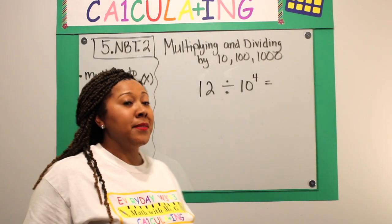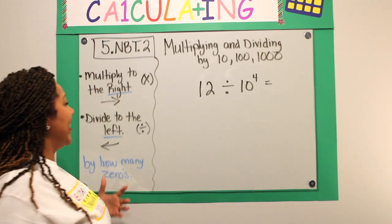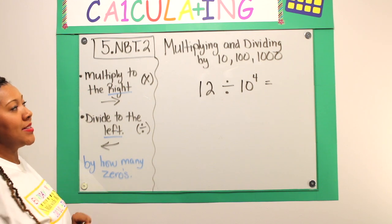Now, let's look at a division problem. I have 12 divided by 10 to the fourth power. Again, looking at our little chart, when I divide, I'm going to the left.